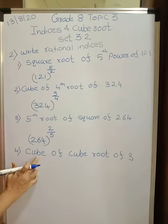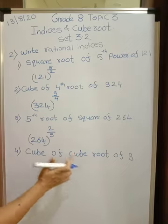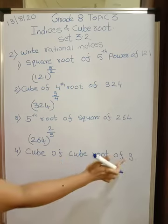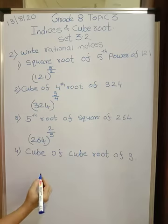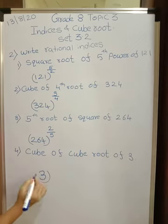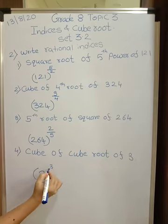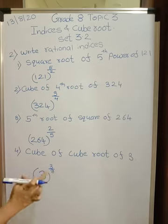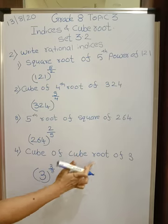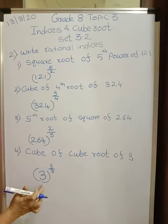Cube of. Here again power is given first because root is given afterwards. Here also cube, here also cube, and here is also 3. So it is 3 raised to 3 upon 3. Power is also cube, and the root is also cube, and base is also 3.